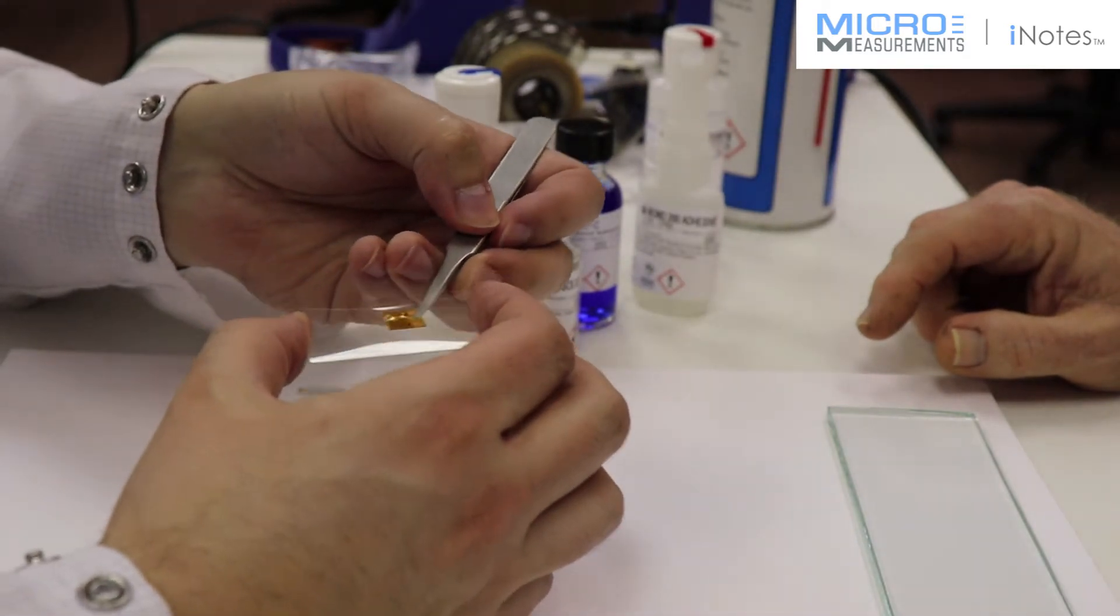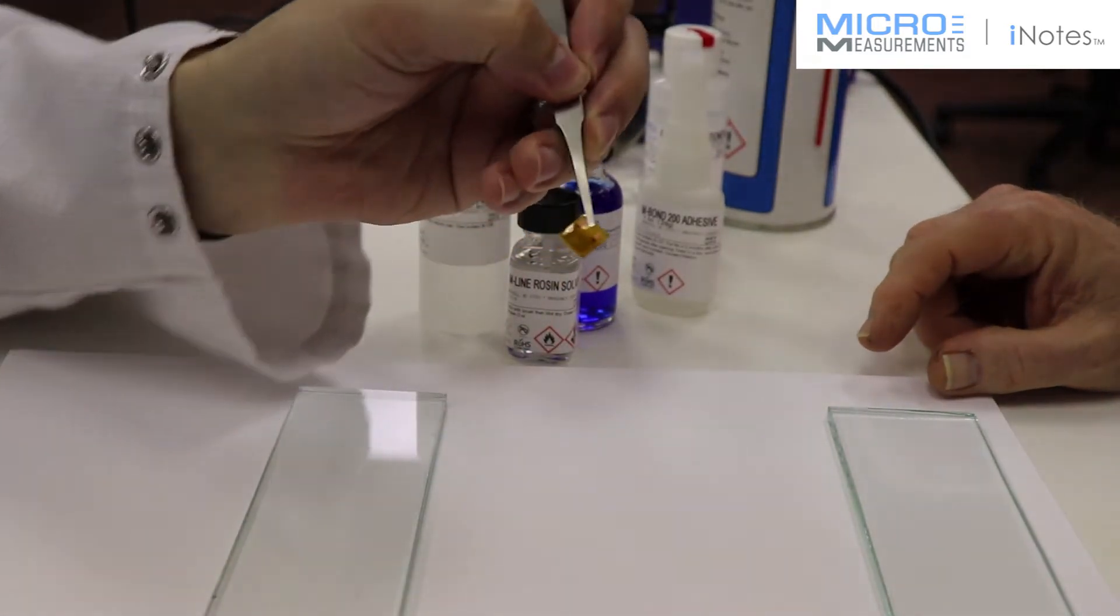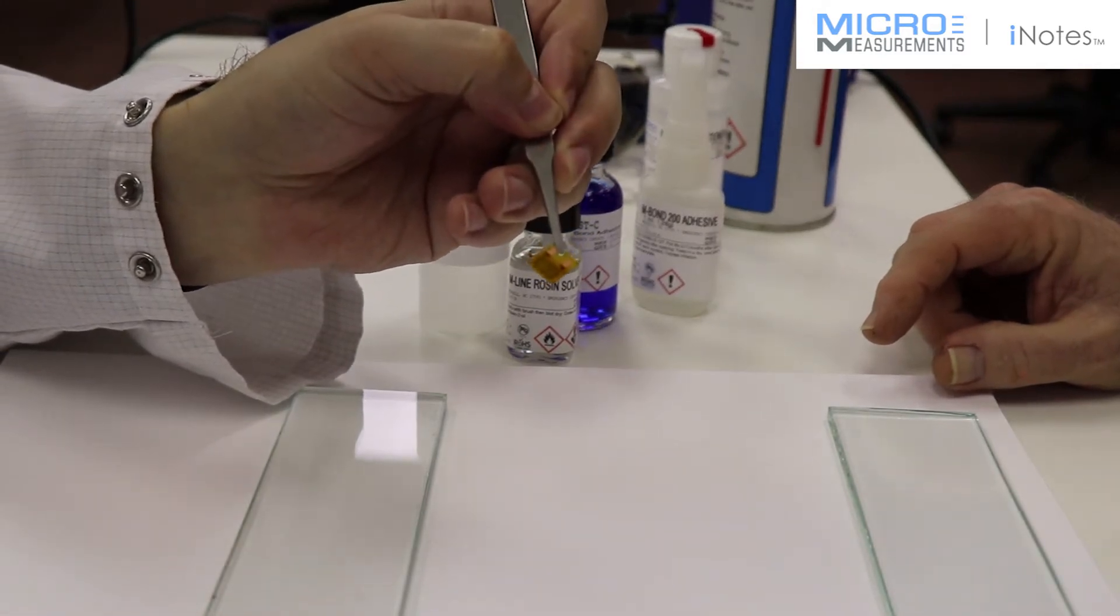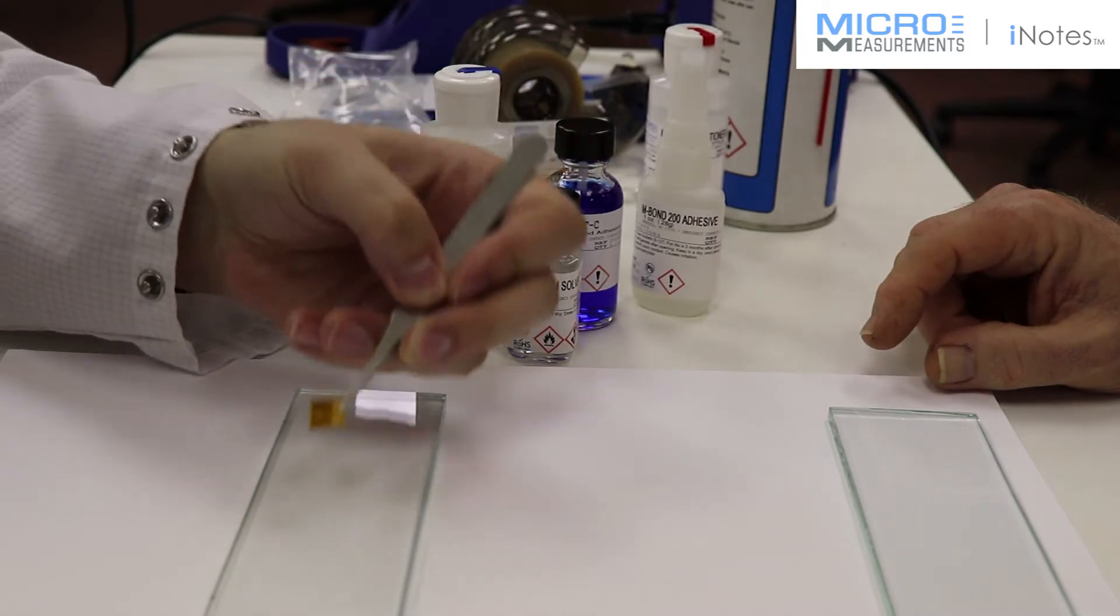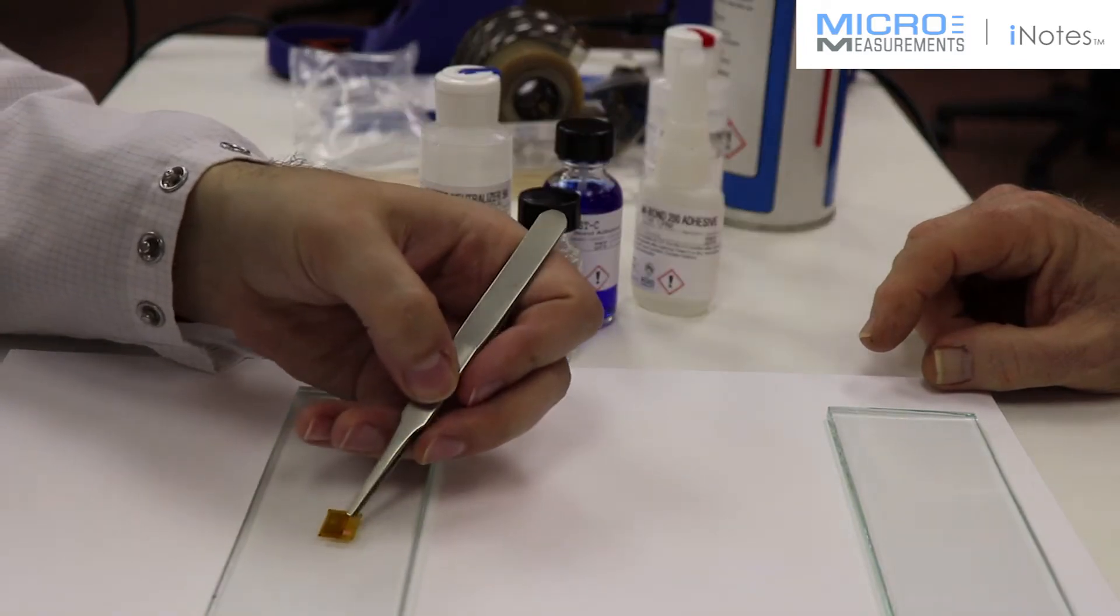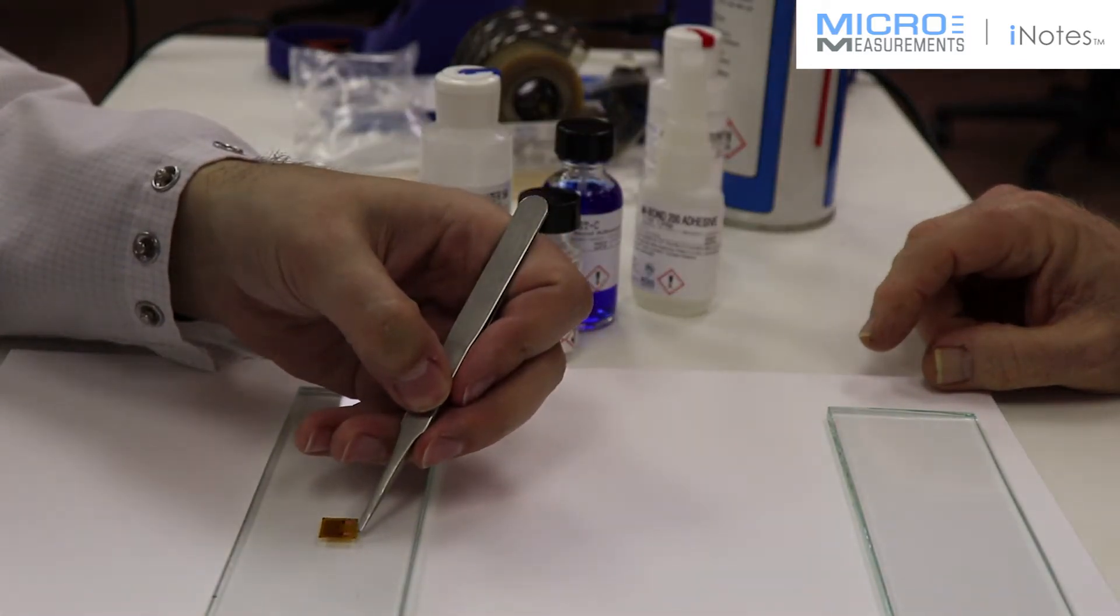Now, the unique thing about the 250UB is the fact that the tabs come off to one side of the gauge, so if you want to run it, slide it up to an edge or a surface, you could do that quite easily with this. He's going to lay that out near the center of the glass plate.